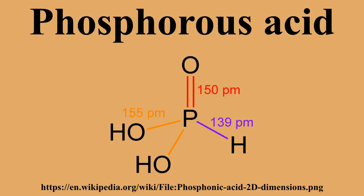Phosphorus acid is a moderately strong acid with a pKa in the range 1.26 to 1.3. H3PO3 → H2PO3⁻ + H⁺ (pKa = 1.3). It is a diprotic acid. The hydrogen phosphonate ion H2PO3⁻ is a moderately strong acid: H2PO3⁻ → HPO3²⁻ + H⁺ (pKa = 6.7).